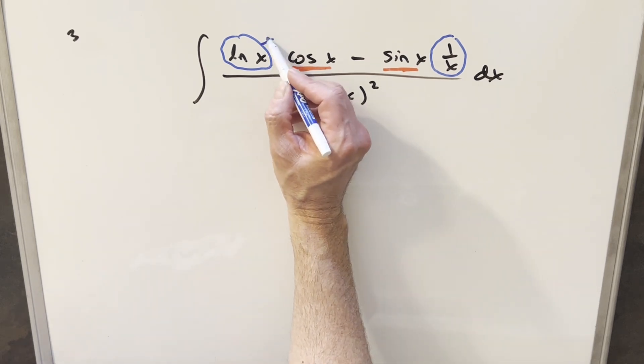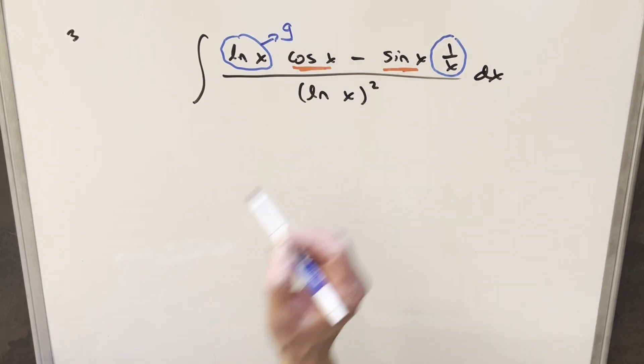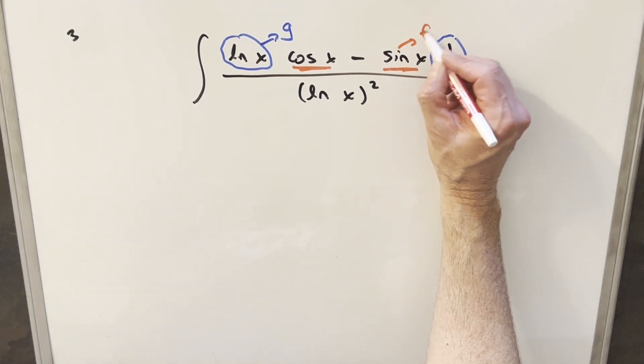So what I think I'm going to do is I'm actually going to just label this ln x. I'm going to call this piece here g. And then for this sine x over here, I'm just going to call this f.